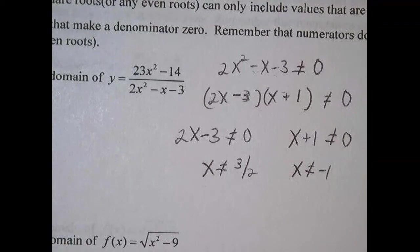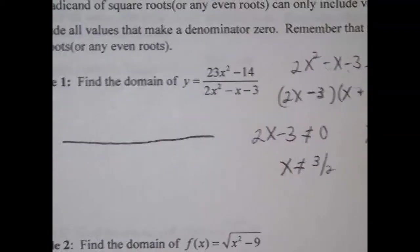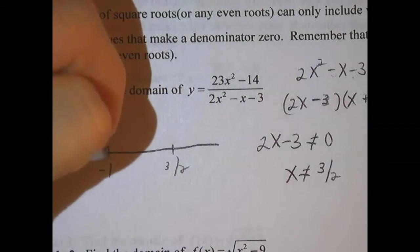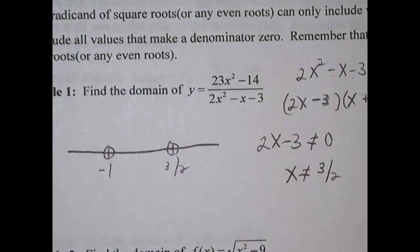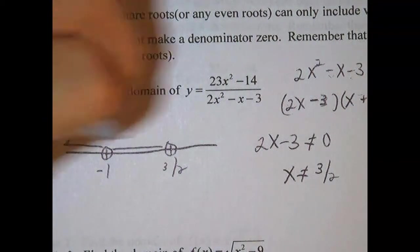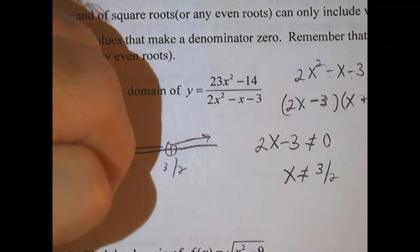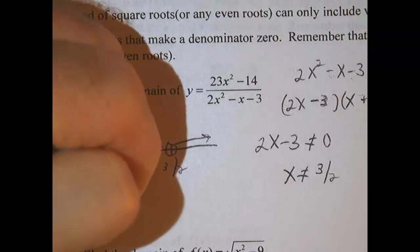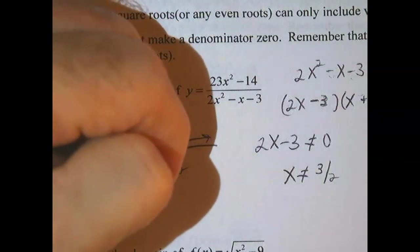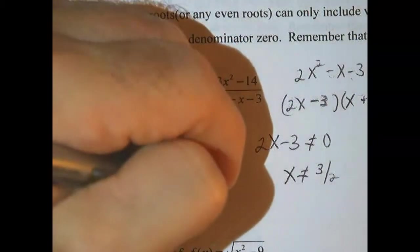All right, we want these in interval notation. So we have a number line. We're going to put both points on that number line and they're both excluded like that. So everything between here, everything over here, and everything over here, there's three intervals and we're going to name them all three with the union. So we have (-∞, -1) union with (-1, 3/2) and union with (3/2, ∞).